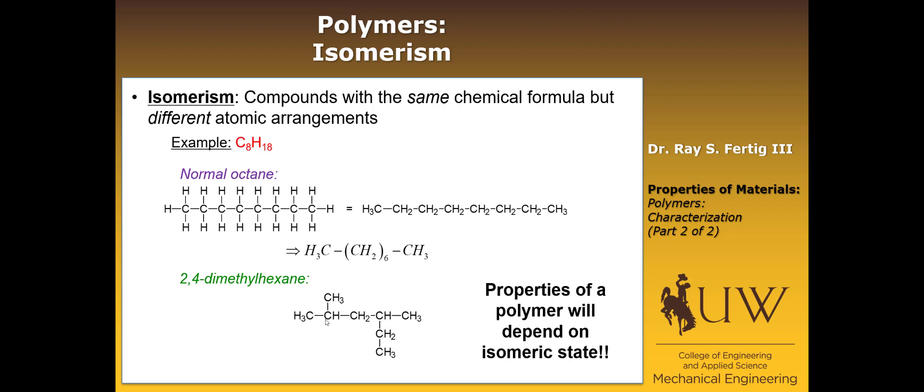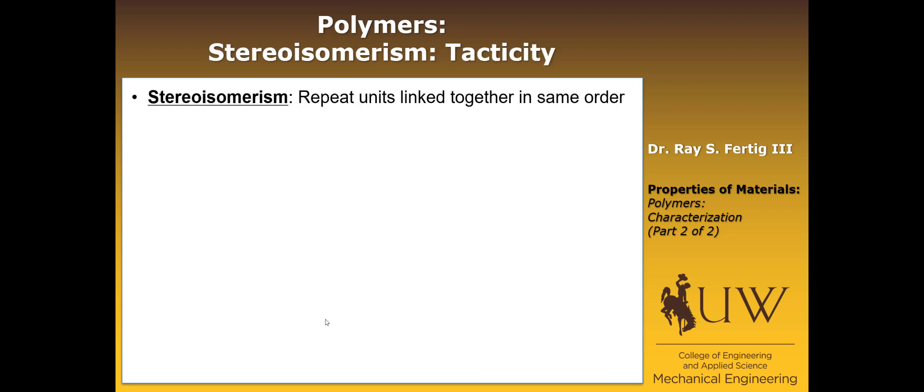There are two subcategories of isomerism. One is called stereoisomerism. And we introduced this concept called tacticity with respect to this type. Stereoisomerism says that the repeat units are linked together in the same order. So if you can imagine your repeat unit being like we've shown for a general case for a hydrocarbon, then they can just link head to tail, head to tail, head to tail.